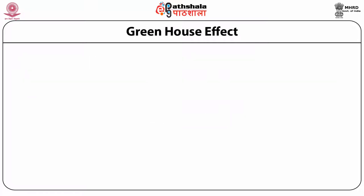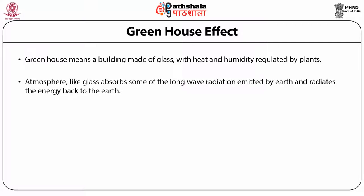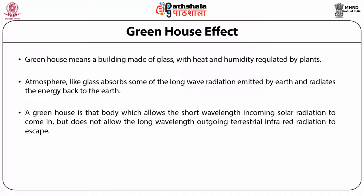Now we shall study greenhouse effect in detail. A greenhouse is a building made of glass with heat and humidity. The atmosphere, like glass, absorbs some of the long-wave radiation emitted by earth and radiates the energy back to the earth. A greenhouse allows short wavelength incoming solar radiation to come in but does not allow long wavelength outgoing terrestrial infrared radiation to escape. Similarly, the earth's atmosphere bottles up the energy of the sun, acting like a greenhouse where carbon dioxide acts as the glass window.